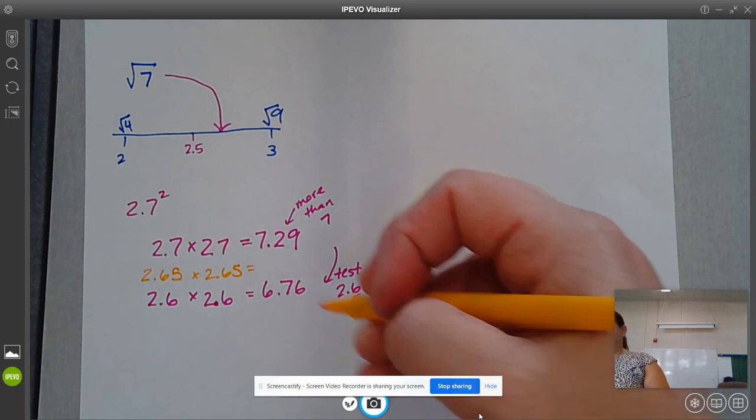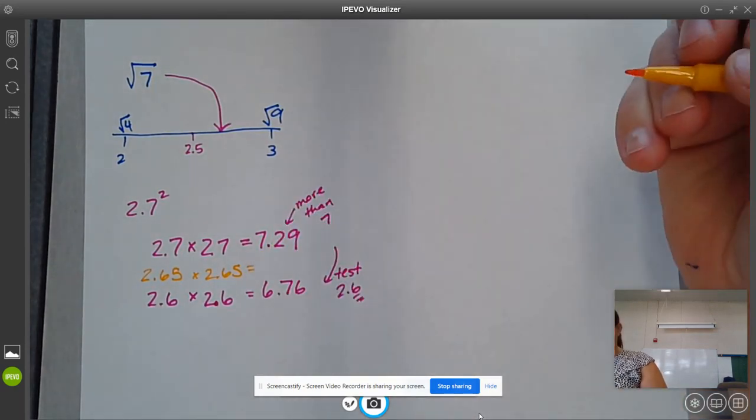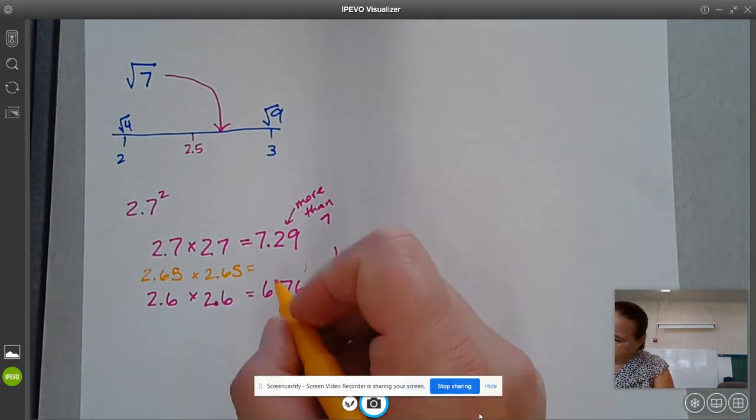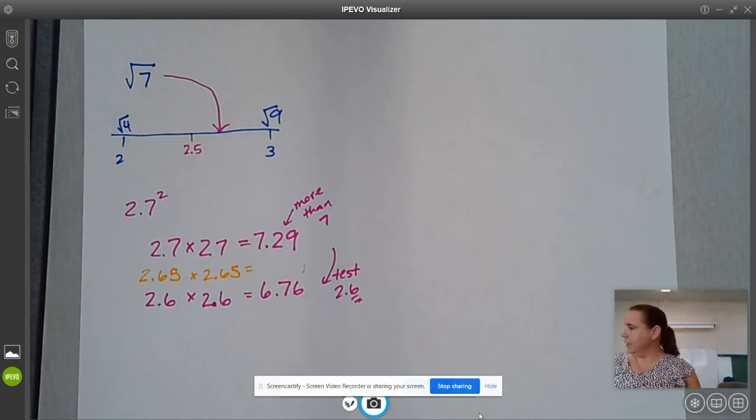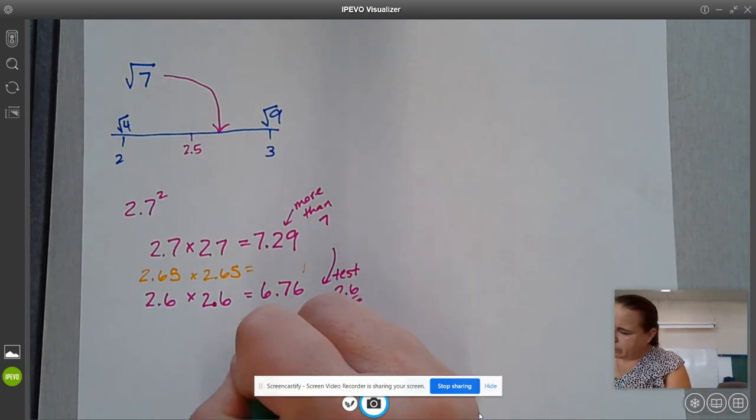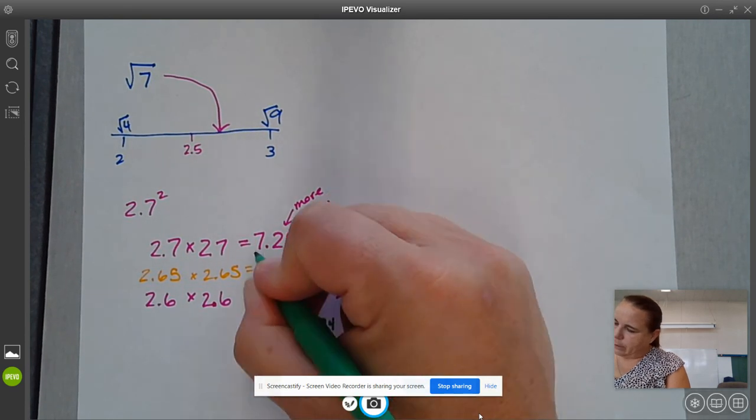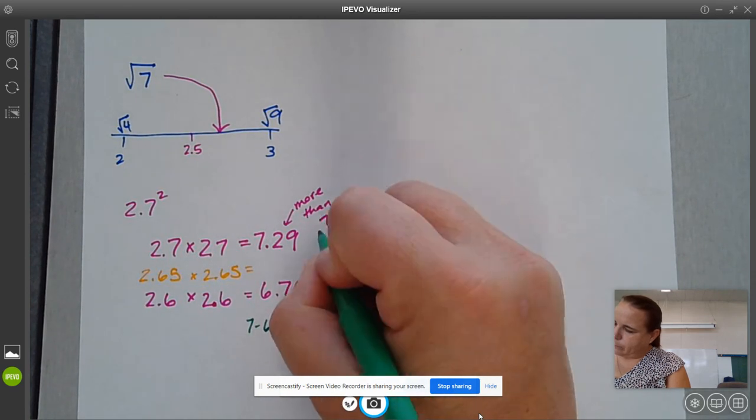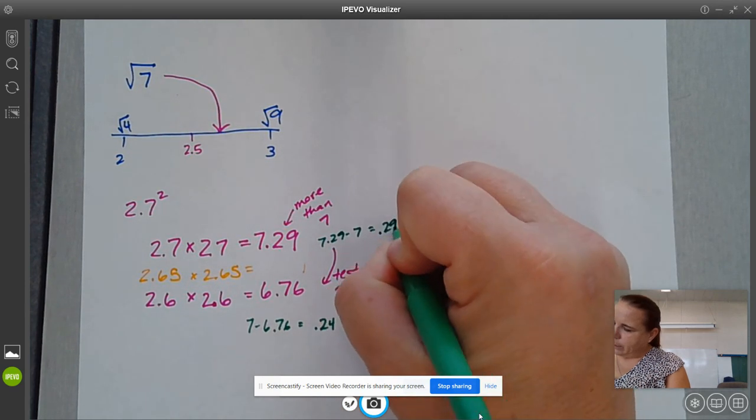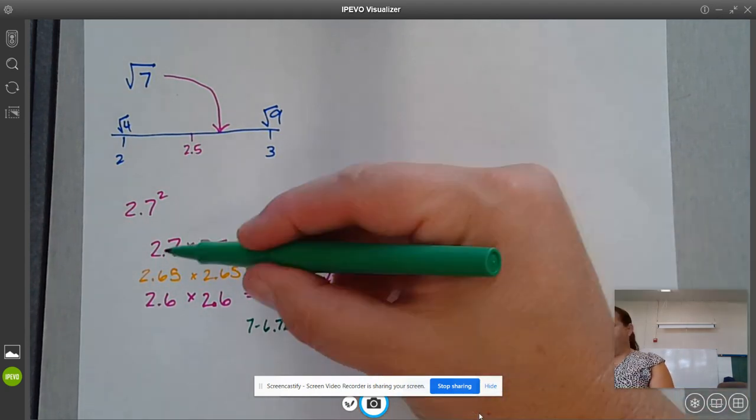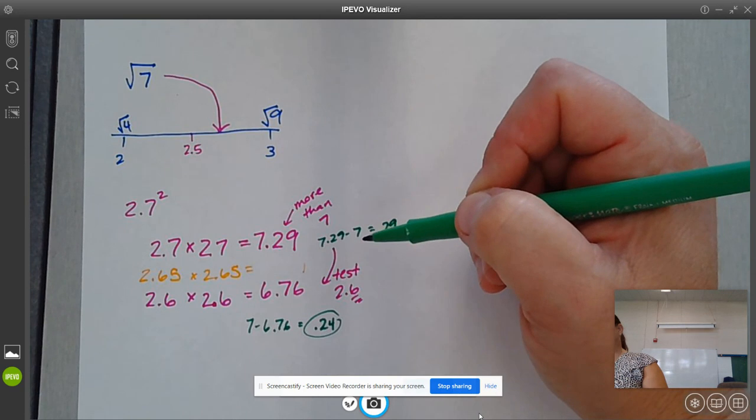That is something we need to figure out. Remember, we would want to subtract and find the difference between those two values. 7 minus 6.76 is 0.24, and 7.29 minus 7 is 0.29. So actually, this one is a little bit closer, but those two values are really close to each other.